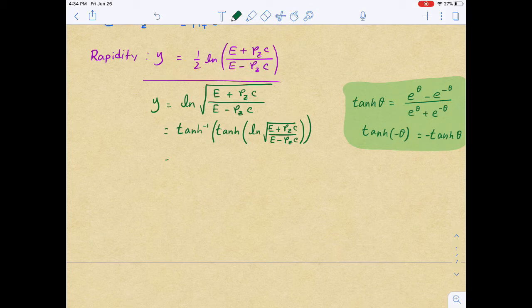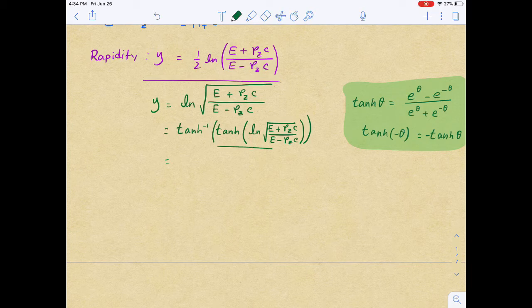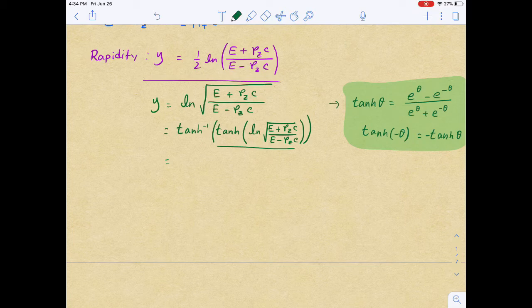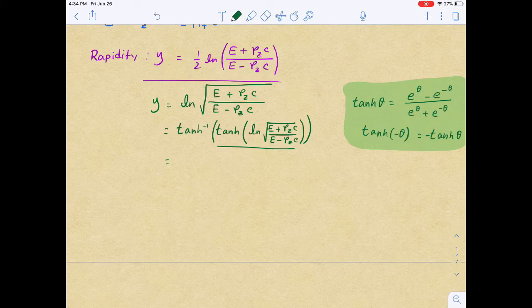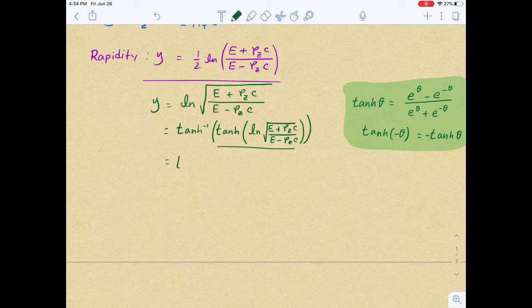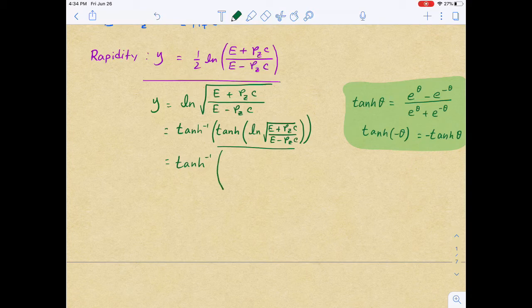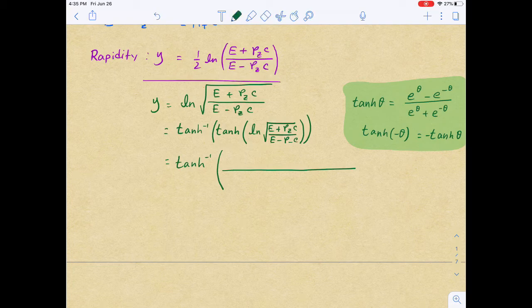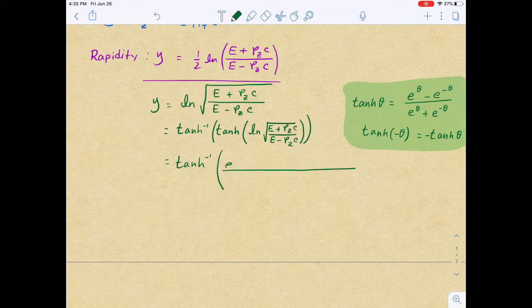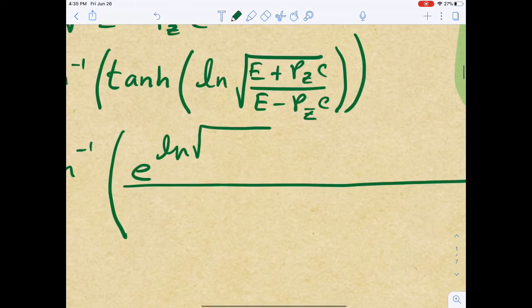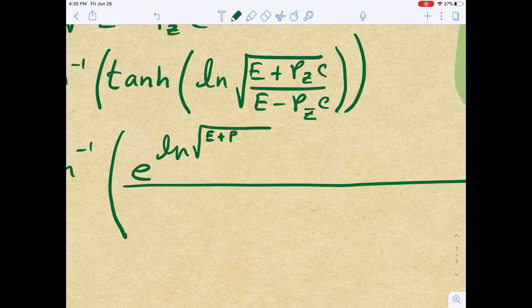This is where it becomes crucial. We already have this identity, where the hyperbolic tangent is a function that can relate, that you can utilize the exponentials. So, we can write down the inverse tangent of, it will be a rather big expression, but let's brave our heart and go with it.